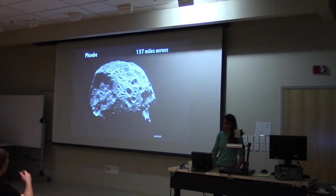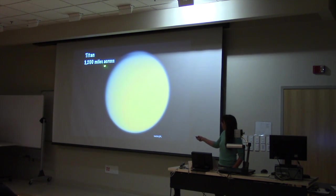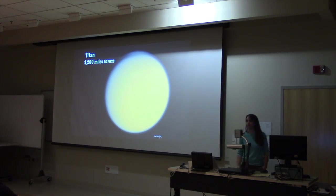This one was 137 miles across. This is over 3,000 miles across. And Titan is actually the second largest moon in the solar system. The only one larger is Ganymede, which is a moon of Jupiter.